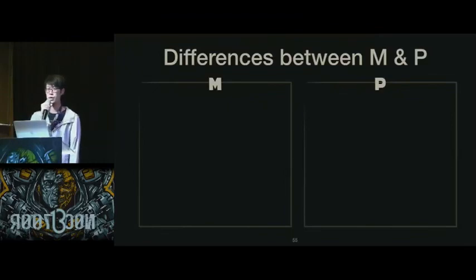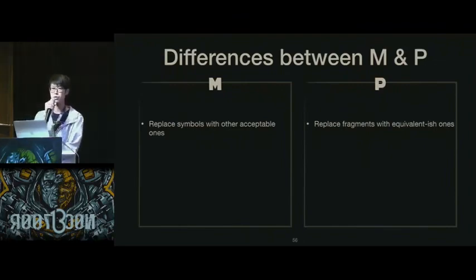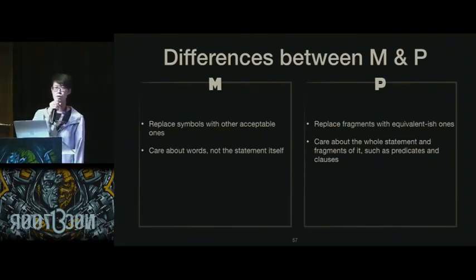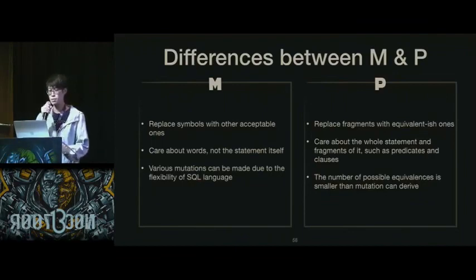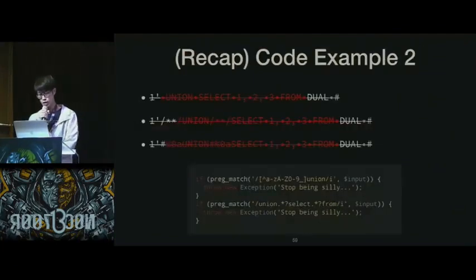Let's compare these two concepts one more time. Mutations try to replace symbols with other acceptable ones. But polymorphism tries to replace fragments of the whole statement with equivalent alternatives. Mutation only cares about words, not the statement itself, whereas polymorphism cares about the whole statement, including the predicates and clauses. Besides, various mutations can be chained due to the flexibility of SQL language. However, in polymorphism, the number of possible equivalents is smaller than what mutations can produce.